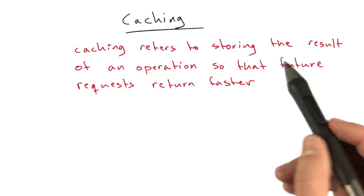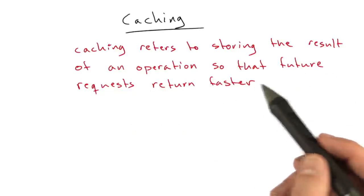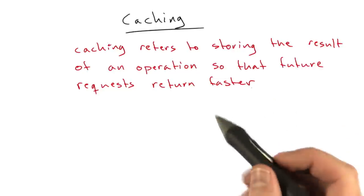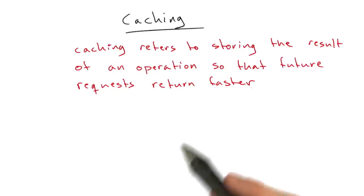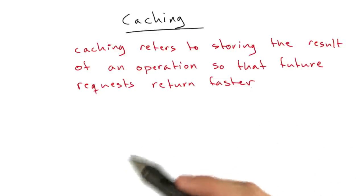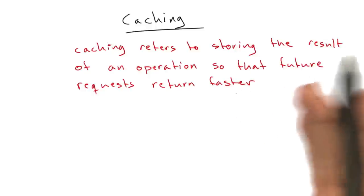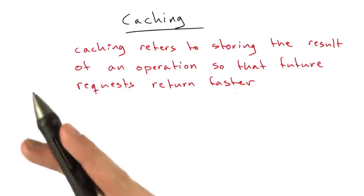Caching refers to storing the result of an operation so that future requests return faster. Basically, if you do something once, whether it's a database query or rendering some HTML or anything that might be slow, you store the results so you don't have to do the computation a second time. Instead, you can just reference the previous result.